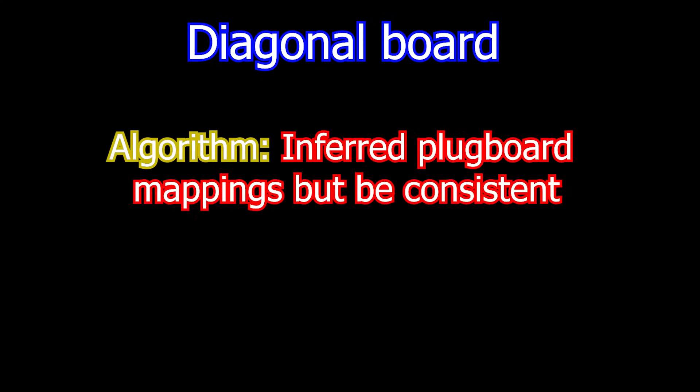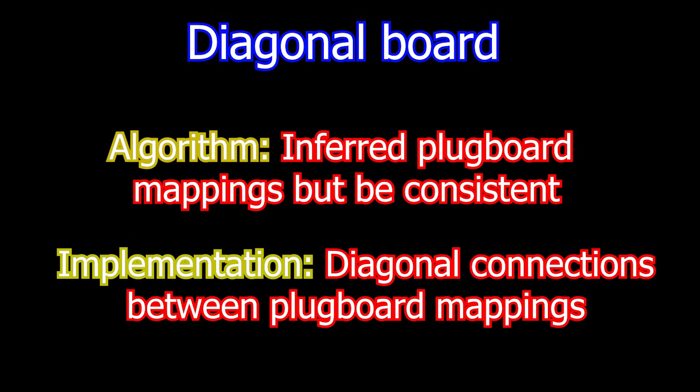The implementation is called a diagonal board, but from an algorithmic perspective, it's hard to understand the name. But from an implementation perspective, it's pretty obvious. We'll get to that later. Before we worry about the implementation, let's see if we can understand the algorithm by adding it to our software emulator.